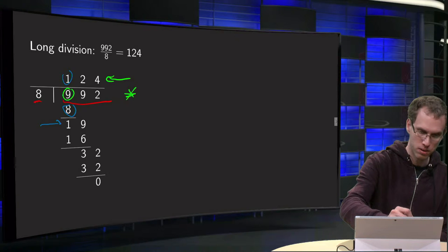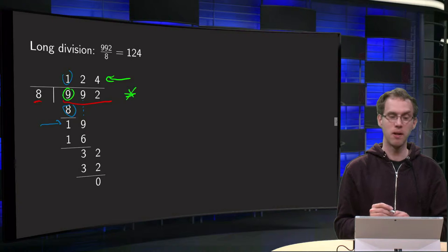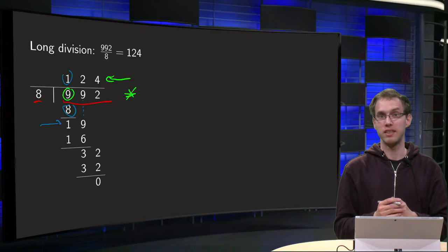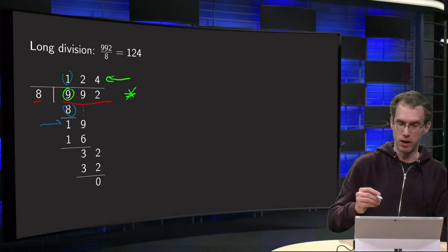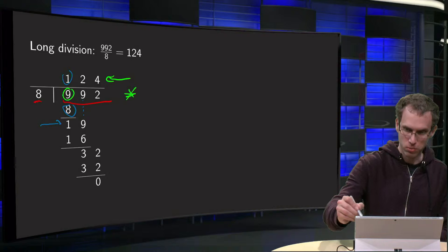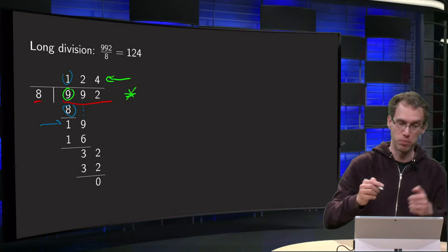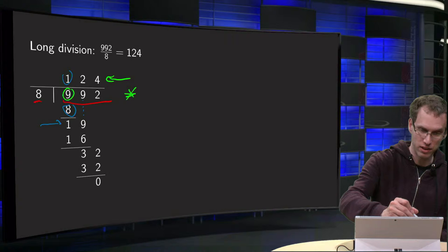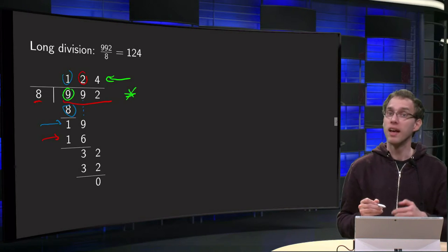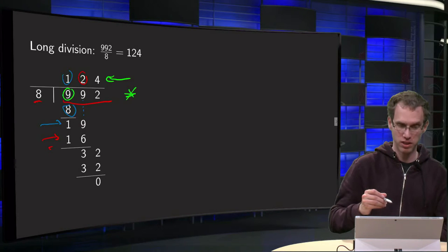Then you take the 9 over here and put it behind the 1, so you have a 19. How many times can you get 8 into 19? You can get that in 2 times — then you get 16. If you try 3 times, that's 24, which is too big, so you can get it in 2 times, giving 16. Subtract: 19 minus 16 equals 3.